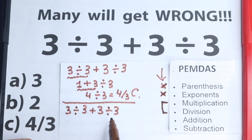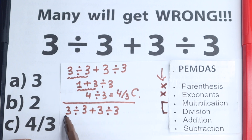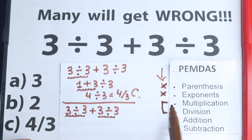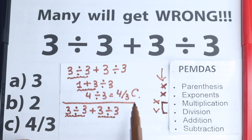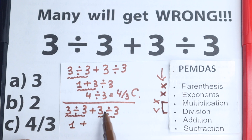We need to look at it as a group — where do we have multiplication and division signs? We have a division sign here, and we have addition — that's not our case — and we have one more division. So our case is the multiplication and division part. In our case we don't have any multiplication, we have division. So we need to start with this division: 3 divided by 3 equals 1, and we have plus, and 3 divided by 3 equals 1.